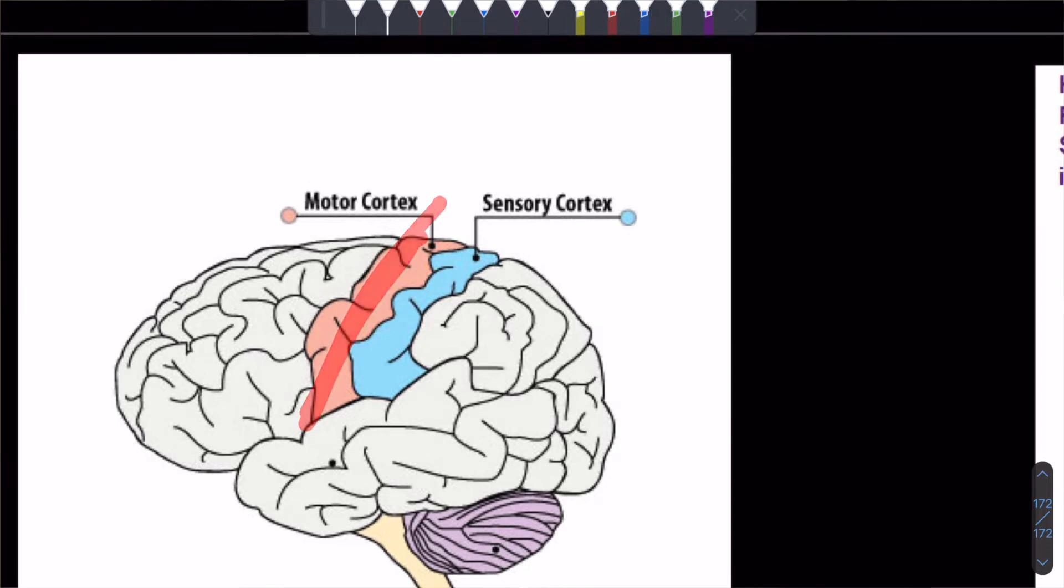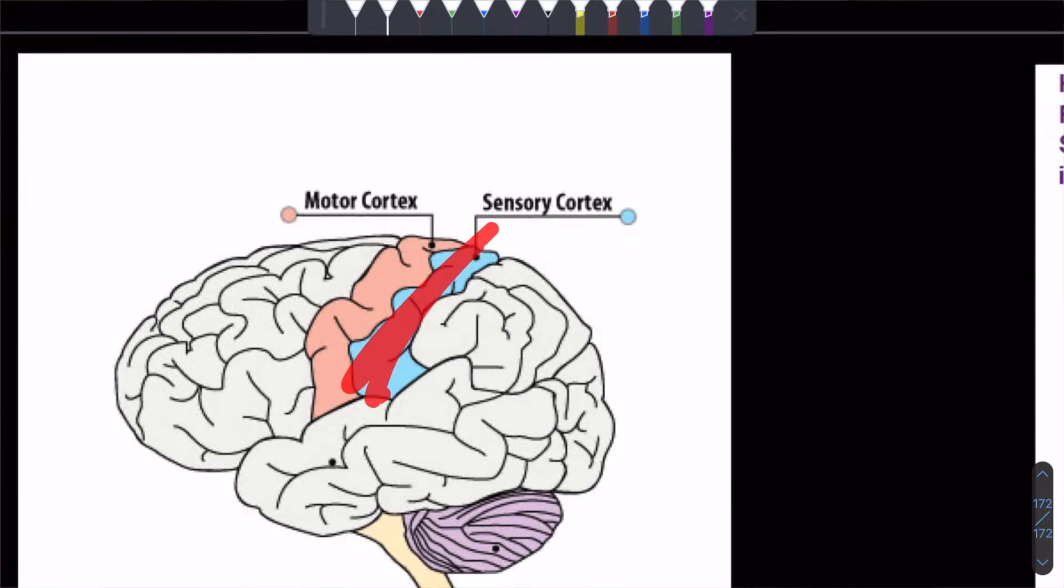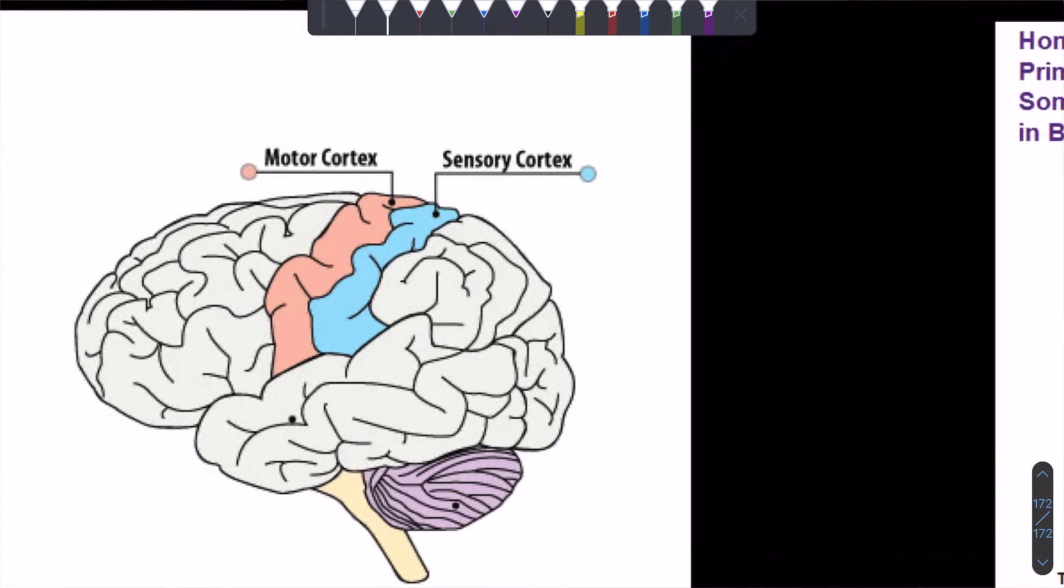This half is primarily involved in our movement and sending efferent signals out to get us to move. And the somatosensory is afferent signals coming to it to inform what motor movements we should make and what we should do.